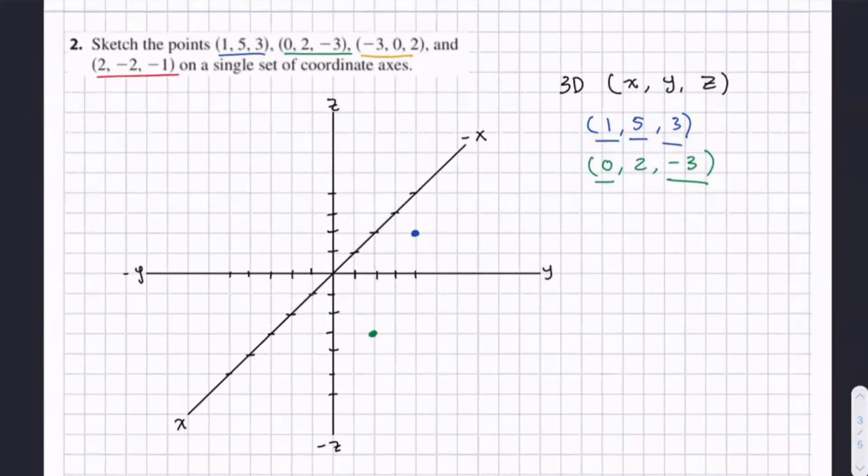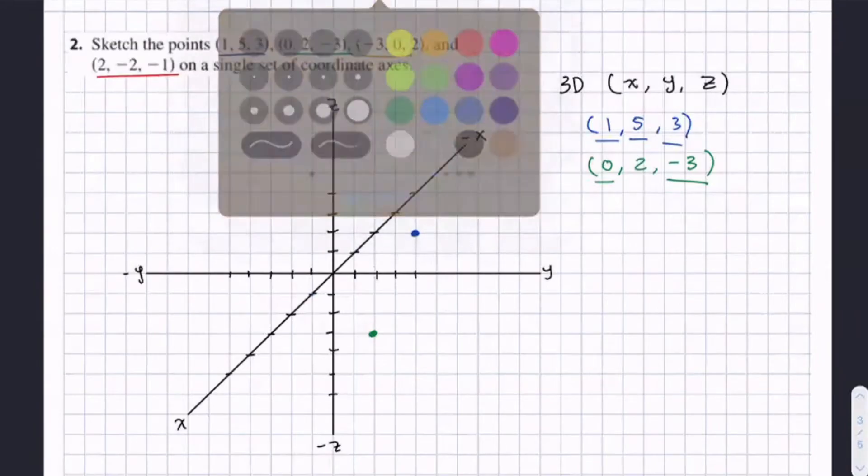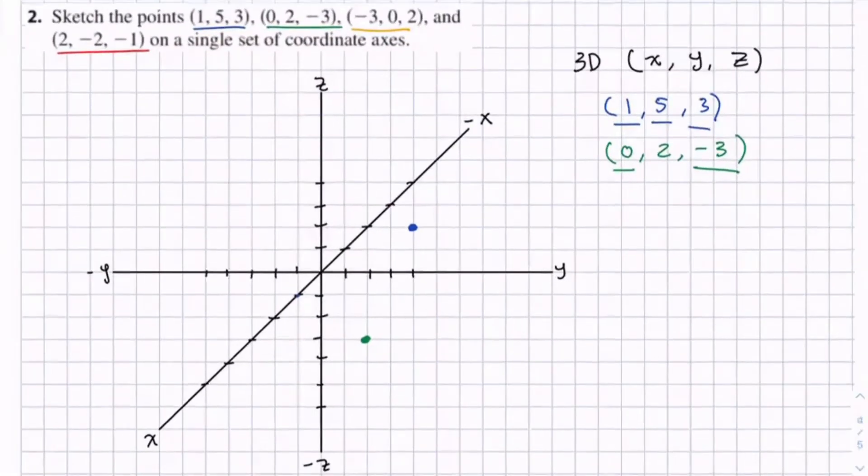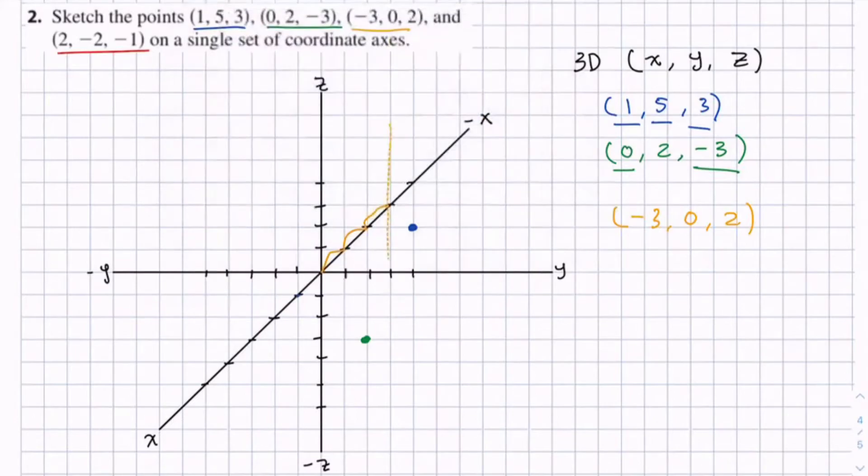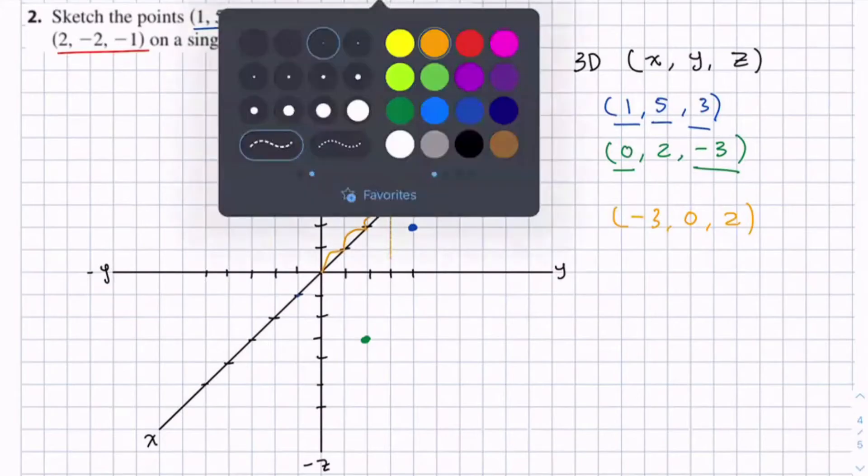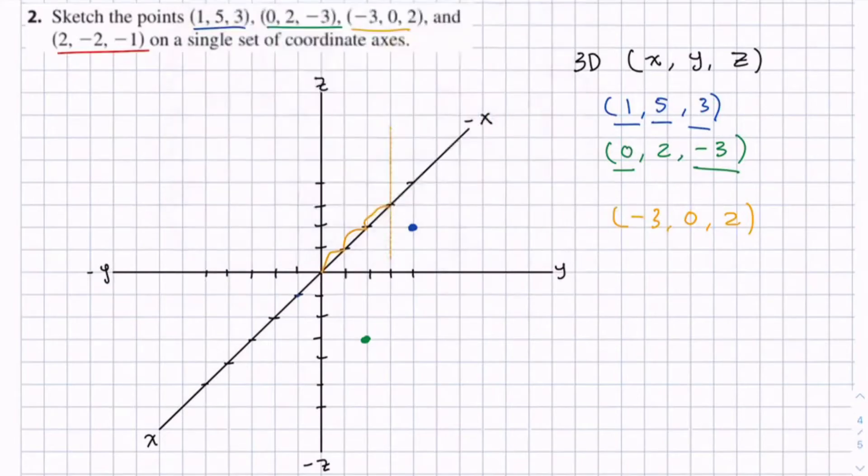Alright, so let's move on to the next point: (-3, 0, 2). So in the x-direction we go backwards three units: negative 1, negative 2, negative 3. We don't go anywhere in the y, and we go up two. So we draw that vertical line where the point is on the x-y plane, and we go up two: 1, 2. So here's our point.